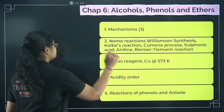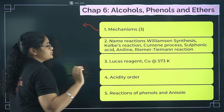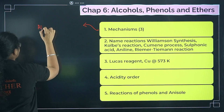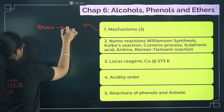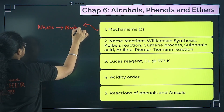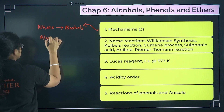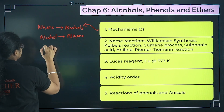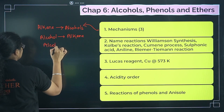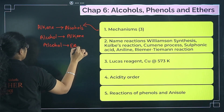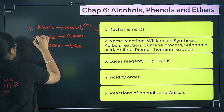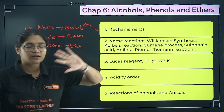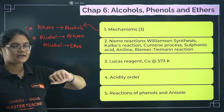Now the last chapter: Alcohols, Phenols, and Ethers. Mechanisms will definitely be asked — there are three in this chapter. The first is preparation/conversion of alkenes to alcohols. The second is the reverse: alcohols to alkenes. The third, less common but possible, is alcohols to ethers. One mechanism out of these will definitely appear as a three-marker question.